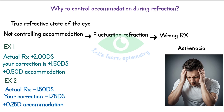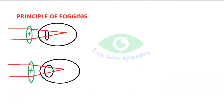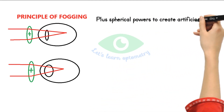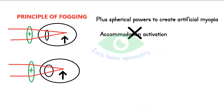With relaxing accommodation, we can avoid under-correction of hyperopia or over-correction of myopia. The principle of fogging involves using plus spherical powers to create artificial myopia, thereby moving the entire area of focus in front of the retina. Now if the eye accommodates further, the rays will further converge and make the image blurred, so accommodation will not be stimulated. Fogging is effective irrespective of the refractive state of the eye and can be done for all types of refractive errors.